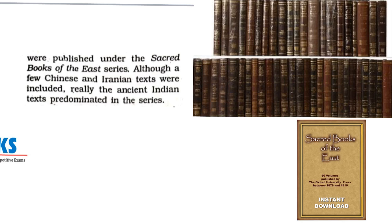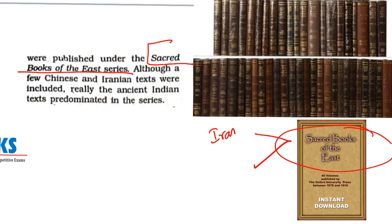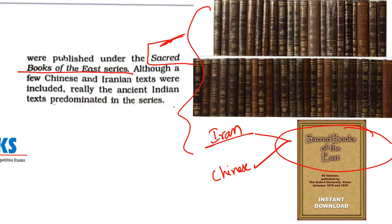This push resulted in the translation of around 50 volumes of several books, published under the name Sacred Books of the East series. Remember: this series did not contain only Indian texts — it also included Iranian and Chinese texts. Recall that William Jones had stated that European languages were similar to both Iranian and Indian languages, which is why the series includes Iranian and Chinese texts, though it was dominated by Indian texts.